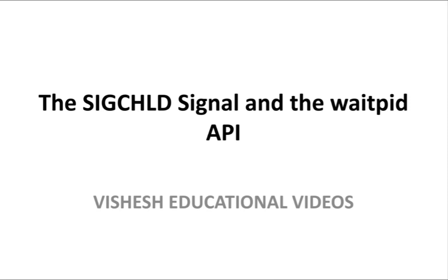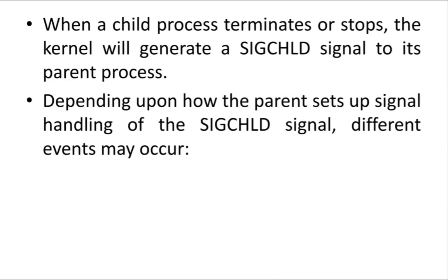When a child process terminates or stops, the kernel will generate a SIGCHLD signal to its parent process. In UNIX, the file system is hierarchical — files are arranged in a parent-child relationship. When a child process terminates or stops, it should notify the parent by sending a SIGCHLD signal.